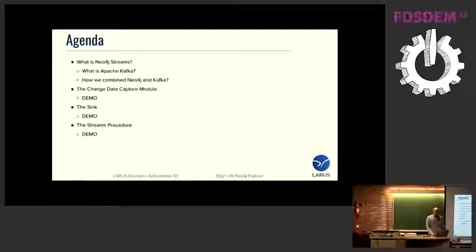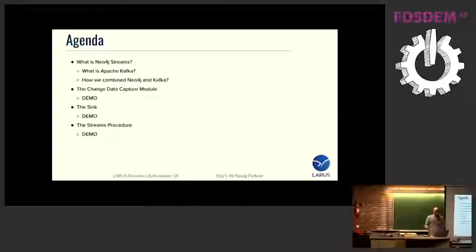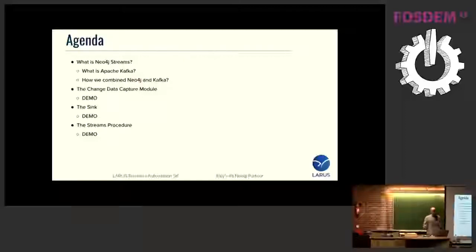How many of you already know what Apache Zeppelin is? For those who don't, it's something like Jupyter. It's a notebook runner that allows you to connect with Neo4j or Apache Spark, and it allows you to have the output of a computation directly in the web browser.